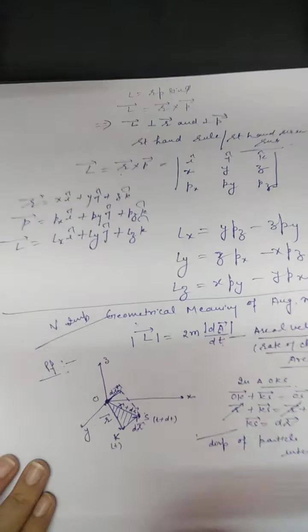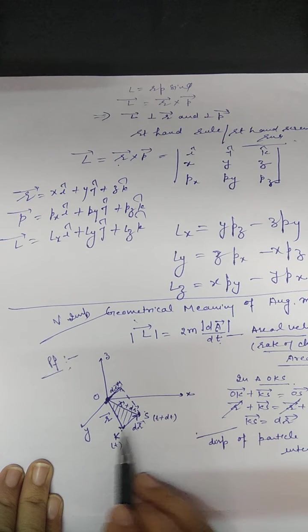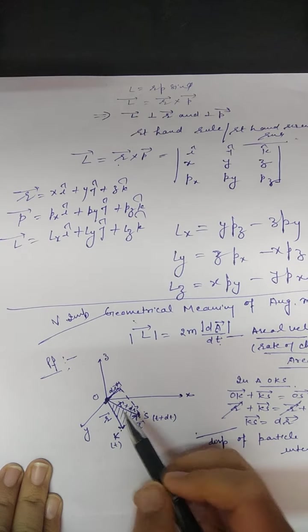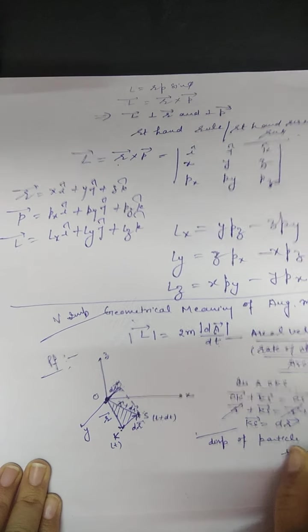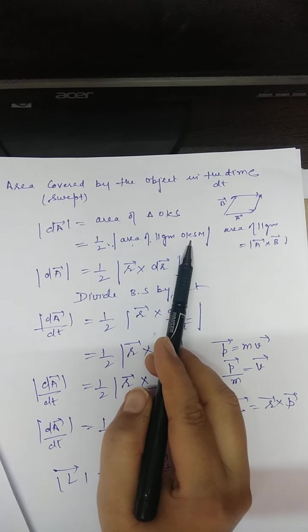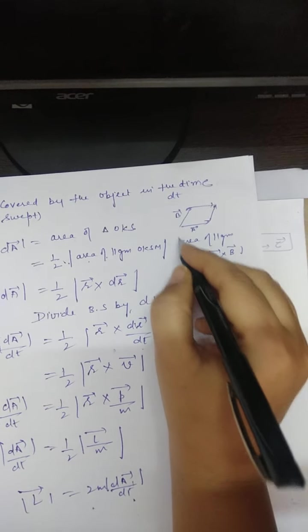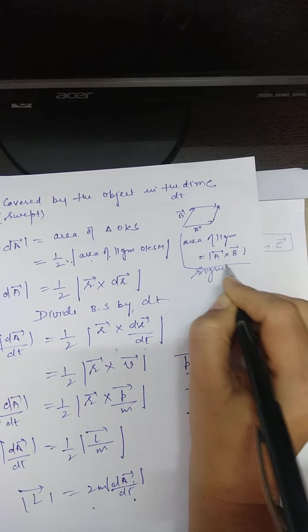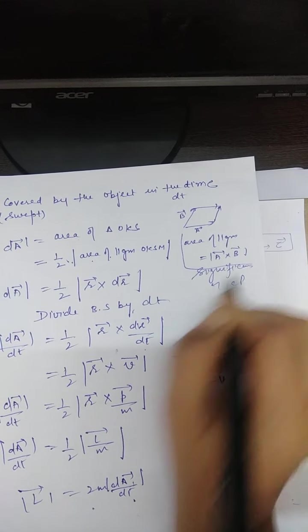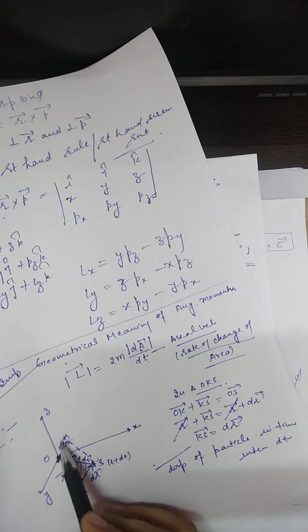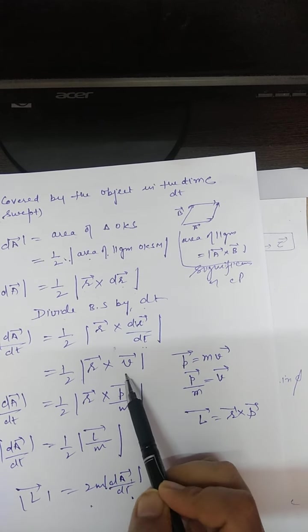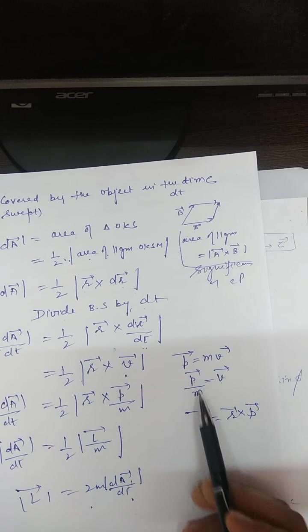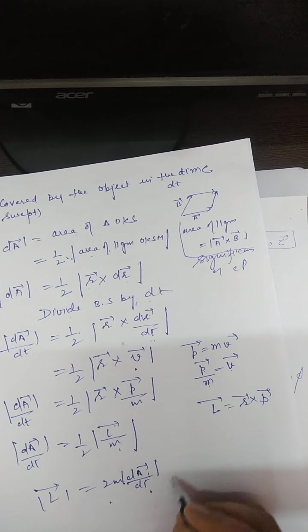To recap: in the first step, we found the particle's position at time t is K, and after dt it is at S, giving displacement dr. We completed the parallelogram and found the area swept. The area of triangle OKS is half the parallelogram area, using the cross product r × dr. Dividing by dt and substituting p/m for v gives L/m, hence L = 2m(dA/dt).